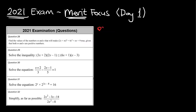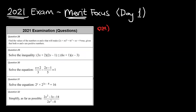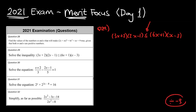On to question 29: solve this inequality. We've got (3x + 2)(2x − 1) ≤ (6x + 1)(x − 3). The inequality sign works exactly the same as an equals sign, except if you're dividing by a negative number — that's the only time it's different. All the x's are locked in brackets, so my first step is expanding all these brackets.